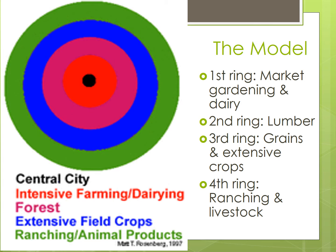In the third ring, crops such as wheat, corn, and other grain crops are grown. These crops are more extensive, providing lower revenue per parcel of land. In addition, they are less bulky and easier to transport without risk of perishing en route.